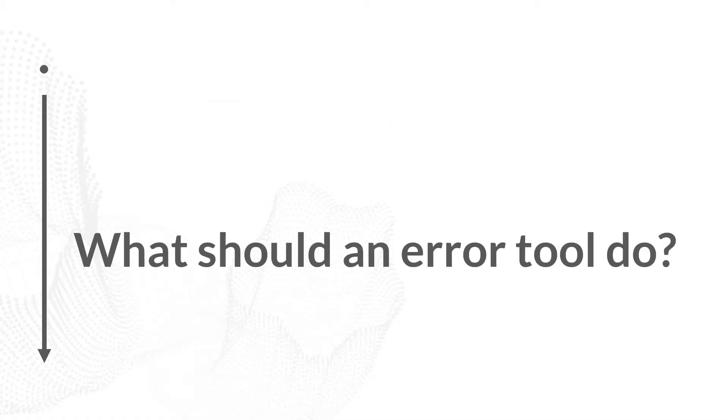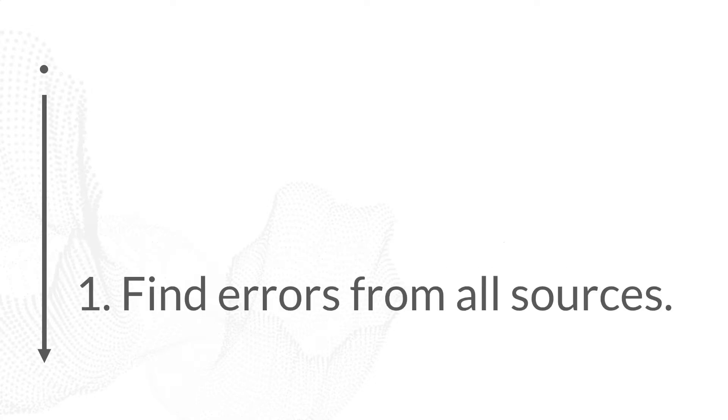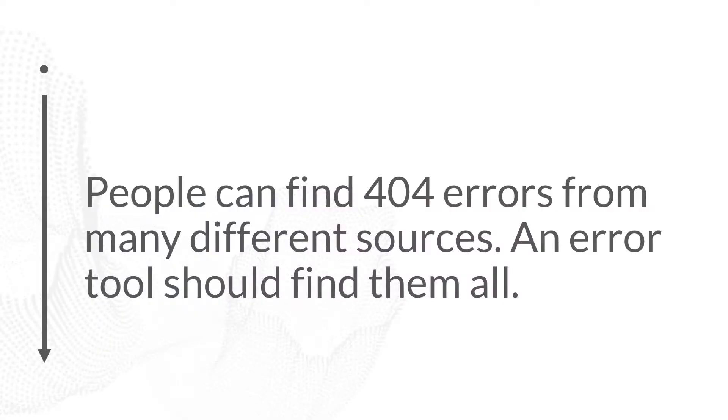Let's begin by looking at what an error tool should do — what are the main considerations we should have? The first thing is that an error tool needs to find errors from all different sources. People can find errors in lots of different ways: they can click on links on your website, on other websites, on broken links in emails or social shares, or they can have something in their favorites that leads to a 404. They can also directly type in a URL that leads them to a 404 as well. You want an error tool that can find 404s from all of these different sources.